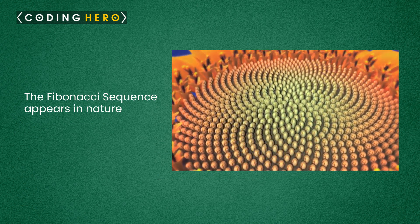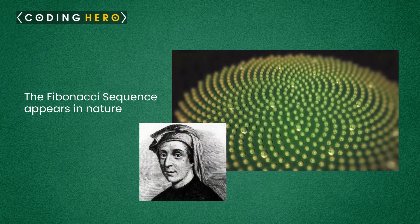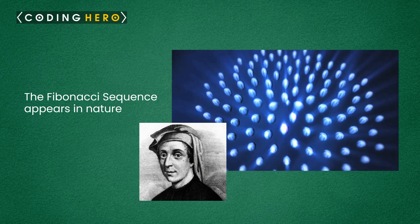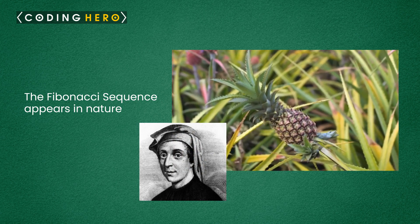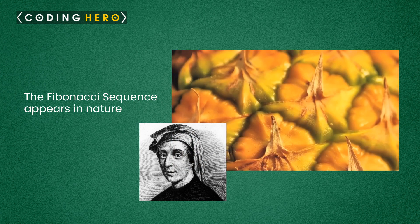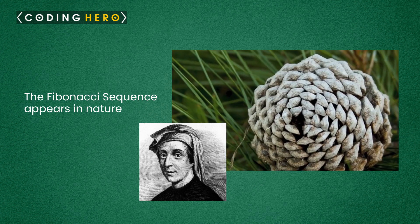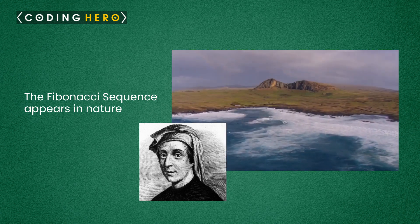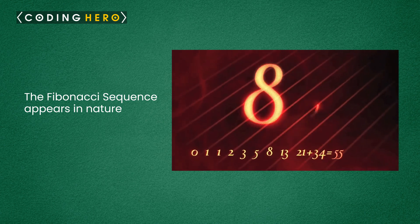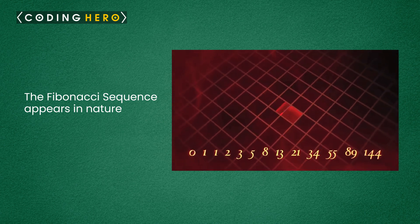The Fibonacci Sequence appears in nature. Leonardo Fibonacci, who lived in the 13th century in Italy, is credited with discovering a mathematical sequence now named after him. Starting at 0 and 1, this sequence is generated as the sum of two preceding numbers in the sequence.